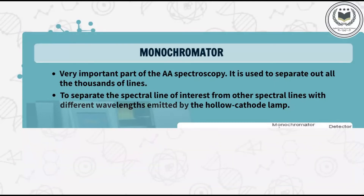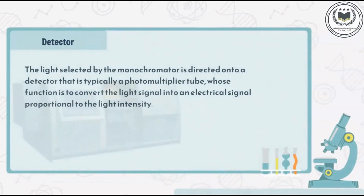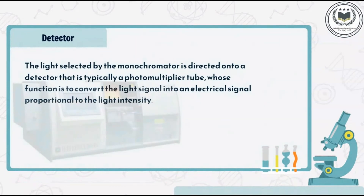The light selected by the monochromator is directed onto a detector, typically a photomultiplier tube, whose function is to convert the light signal into an electrical signal proportional to the light intensity. The most used detector in atomic absorption spectrophotometry is the photomultiplier tube, or PMT. No other device offers the same sensitivity over the wavelength range required for atomic absorption analysis.